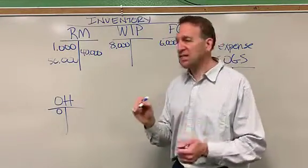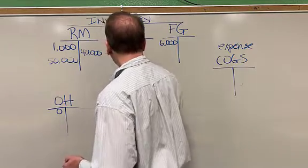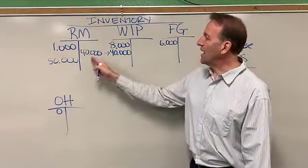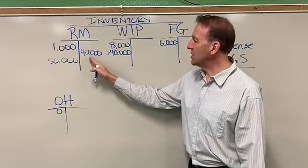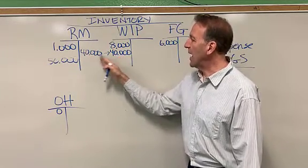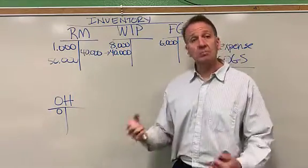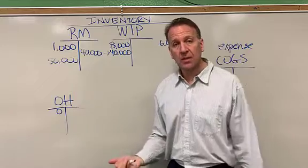So if it's direct materials, then it goes directly into work in process. So they come out of raw materials. There's the credit. And then you would debit work in process out of raw materials into work in process. So our debit and our credit, we're in balance if we're looking at journal entries.